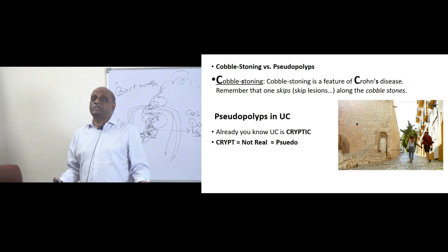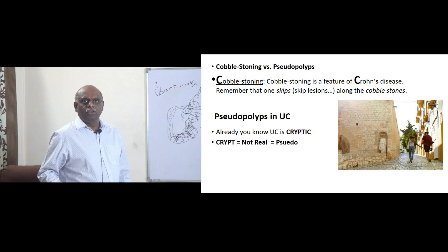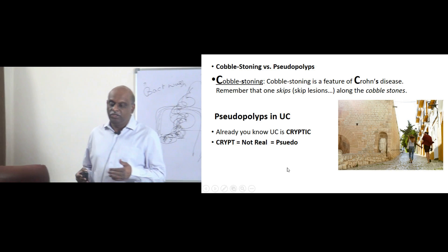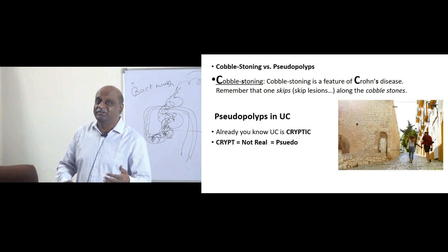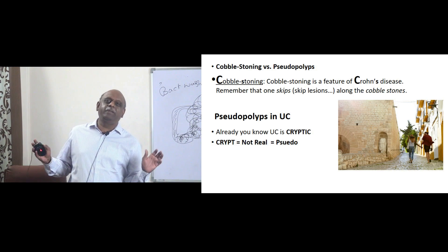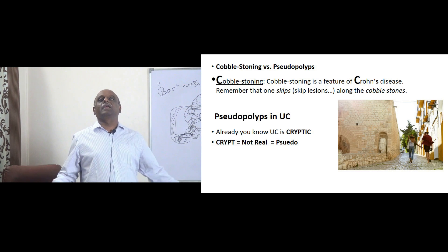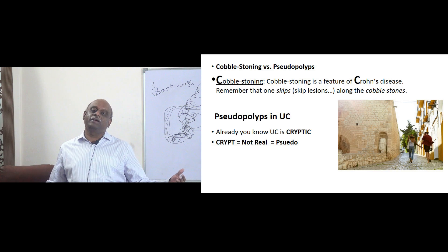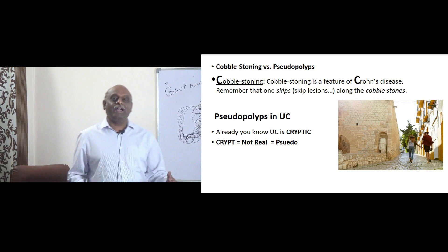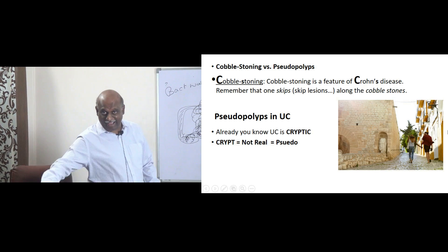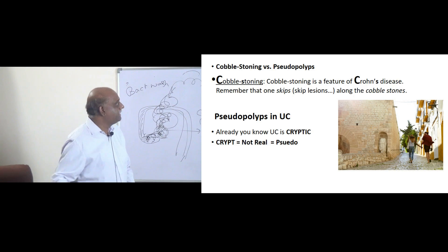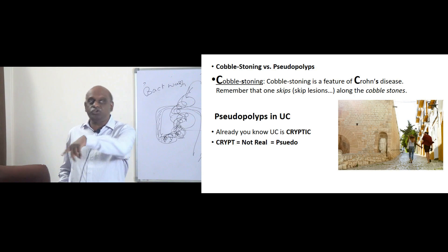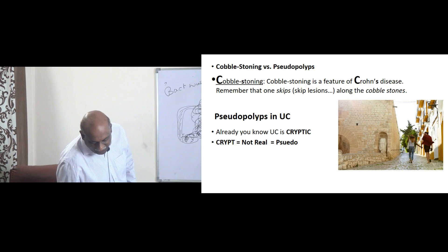Where do you see cobblestoning and pseudopolyps — that is the question. Cobblestoning is a feature of Crohn's. Already you know Crohn's will be skipping. Just close your eyes, relax and think: the entrance exam is over, you became a topper, you went to Rome for a honeymoon, walking, holding hands, slipping and skipping on the cobblestones. So cobblestoning and skip lesions are typical of Crohn's. If you remember skip lesions are in Crohn's, you will remember cobblestone appearance is also there in Crohn's.